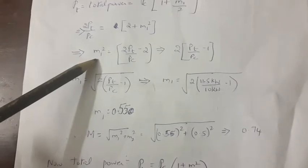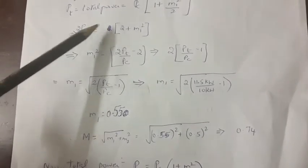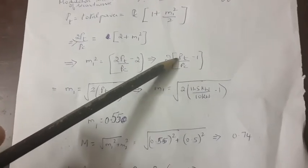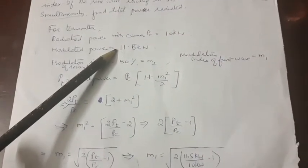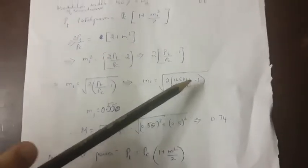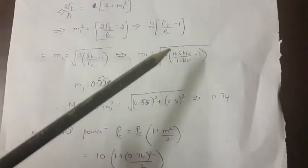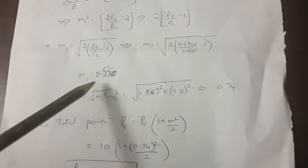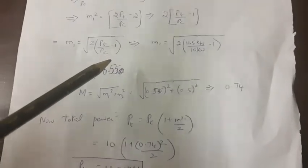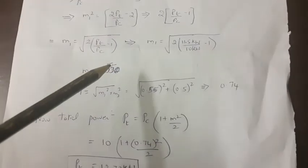Therefore M1² = 2(PT/PC) − 2 = 2(PT/PC − 1). PT is the modulated power of 11.5 kilowatt and PC is the unmodulated carrier power of 10 kilowatt. So M1² = 2(11.5/10 − 1) = 2(0.15) = 0.3. Taking the square root, M1 = 0.55, meaning the depth of modulation is 55.5%.